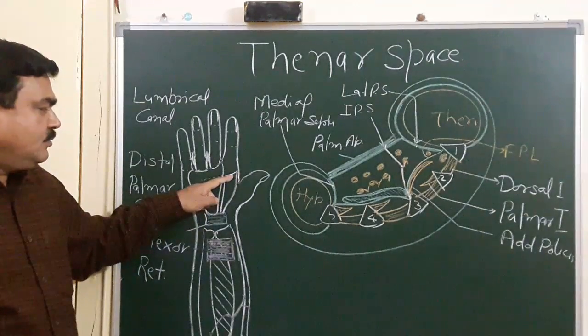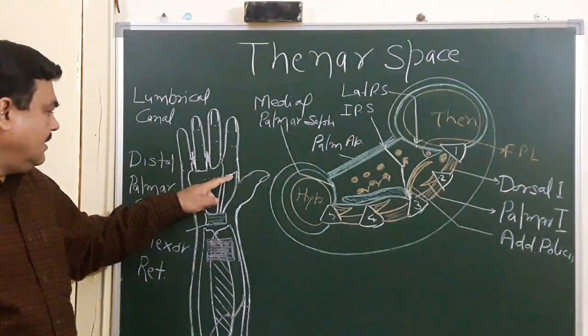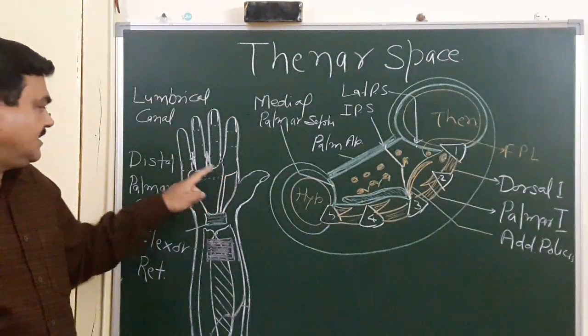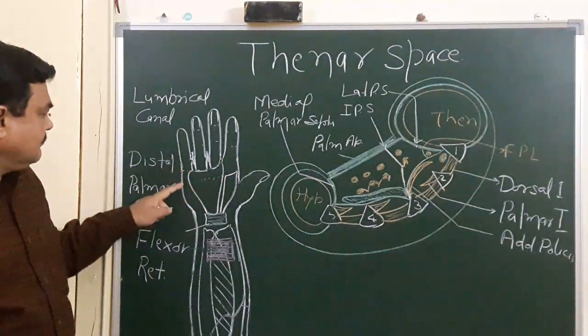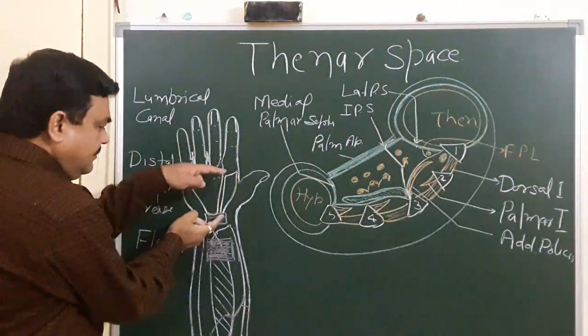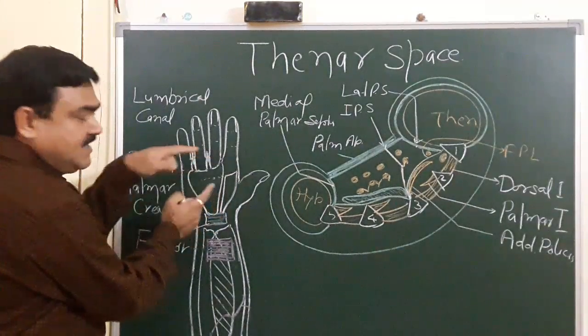Distally up to proximal palmar crease. This is proximal palmar crease, this is distal palmar crease. So, this proximal palmar crease from here to here, this is thenar space.